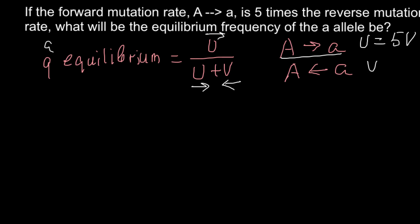So, the new formula would be Q at equilibrium would equal to 5V divided by 5V plus V. And this is going to be the forward mutation rate, and this is going to be backward mutation rate. And as you see, here on the top we are going to get 5V divided by 6V. And we can cancel V, the common elements, and what we are going to get here would be 5 over 6. Or as a decimal, this is going to be 0.833. And this is going to be our answer.